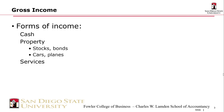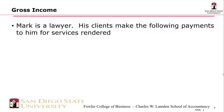Gross income can take basically any form. Cash is a pretty common form — salaries and wages. But you can be paid in property like stocks, bonds, cars, planes. All those things are still forms of income. You can even be paid in services — barter transactions are income transactions as well. You can't skirt recognizing income because someone pays you in some form of property or services that's harder to trace — it's still income.